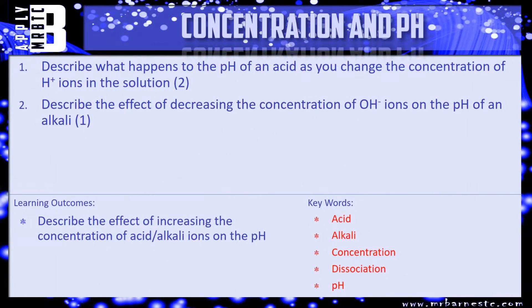Okay, let's have a look at a couple of questions. So the first one says: describe what happens to the pH of an acid as you change the concentration of H+ ions in the solution. It's worth two marks, so talk about what happens when you increase and decrease the concentration. For question two: describe the effect of decreasing the concentration of OH- ions on the pH of an alkali — as the concentration of OH- ions goes down, what happens to the pH? Pause the video, have a go, and we'll see how you've done in a minute.